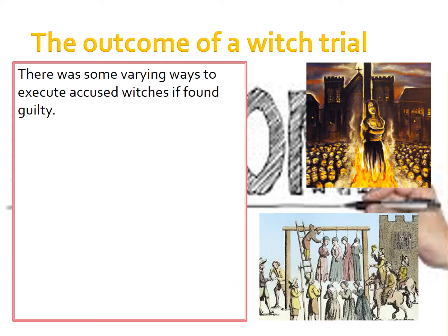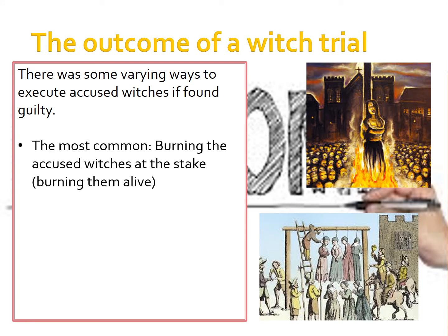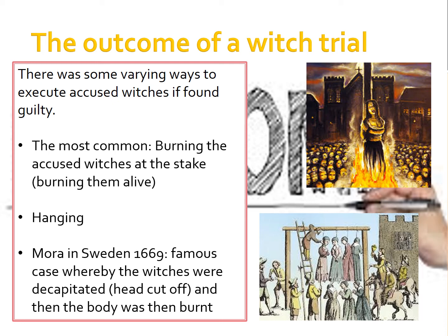Now the outcome of a witch trial. There were varying ways to execute accused witches if found guilty. The most common was burning at the stake — burning the accused witch alive. Another common method was hanging. In Mora, Sweden, in 1669, there is a famous case where witches were actually decapitated — their heads were cut off and then their bodies were burnt at the stake. So the three most common methods were burning at the stake, hanging, and in some cases beheading followed by burning.